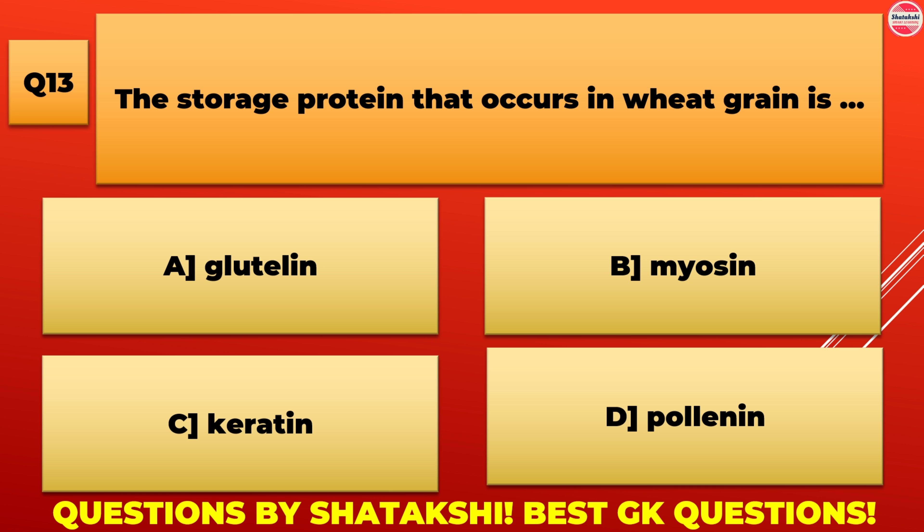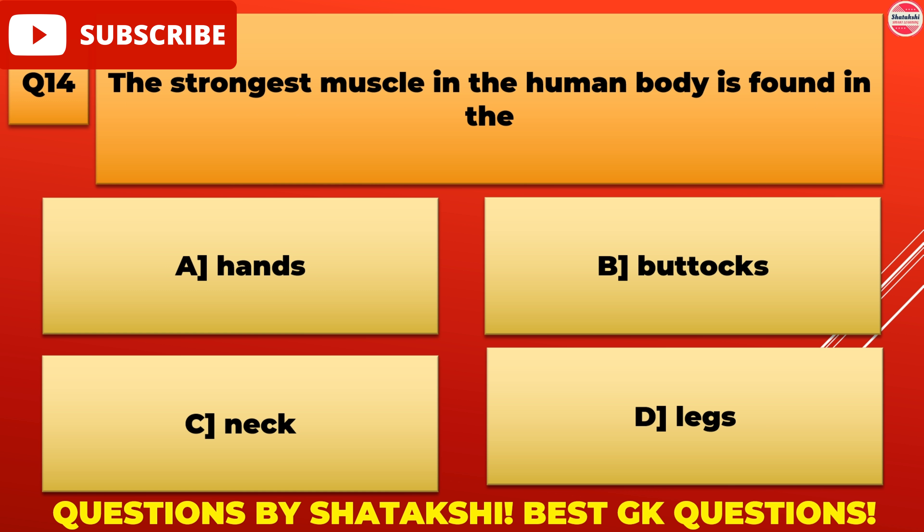The storage protein that occurs in wheat grain is: A. Glutein, B. Myosin, C. Keratin, D. Polymin, E. Gluten. Gluten is the correct answer.